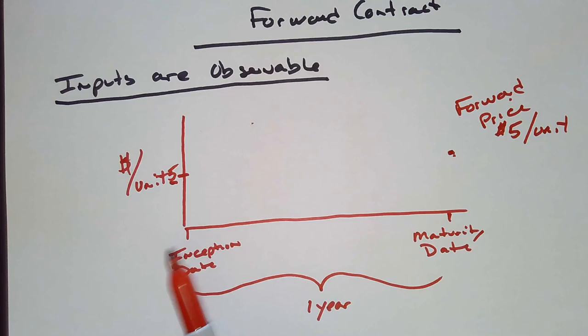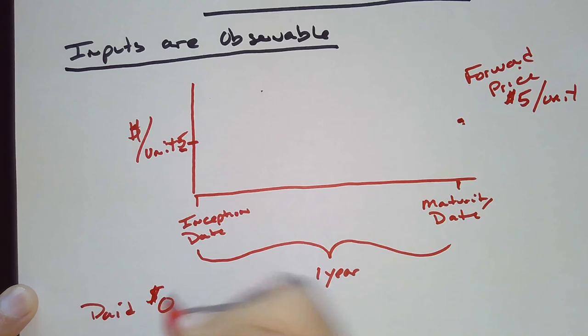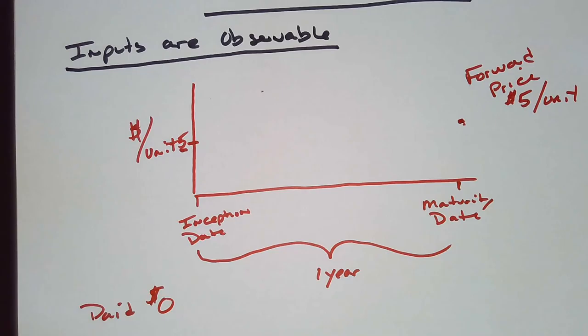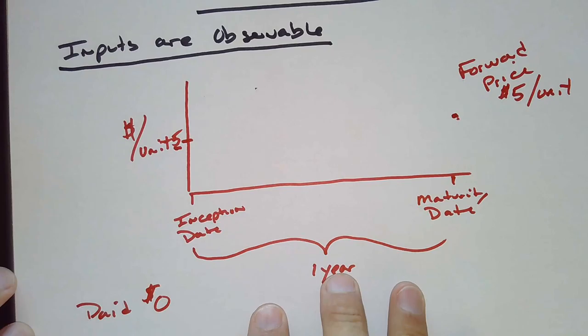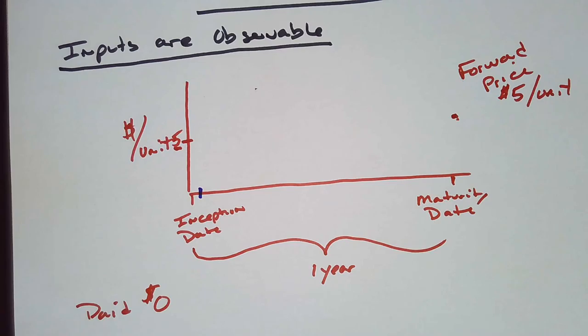I'm going to come back to this because I don't agree. I don't agree that we paid $0 to enter into this forward contract. And so, therefore, the fair value is $0. I don't agree with that. And I'll explain that in a little bit. But what we want to do is, as if we move to the next day, so here's inception date. We go one day into the future.